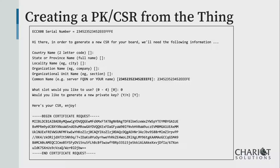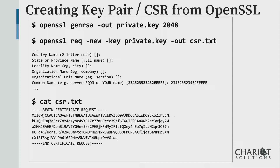Public keys are transferred around; private keys stay on the device where encryption happens. You take that certificate signing request and something signs it to give you a certificate — in our case, Amazon. You could also do this by hand with OpenSSL: generate a key, generate the signing request, then send it to your certificate authority. Either way — whether you use the board, a command line tool, or an API — you end up with a CSR: a request to generate a certificate.